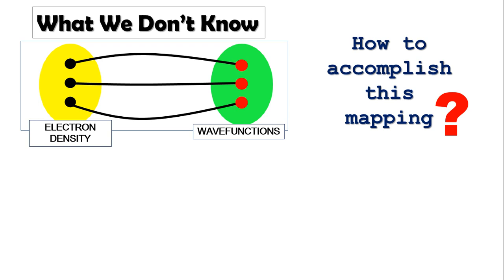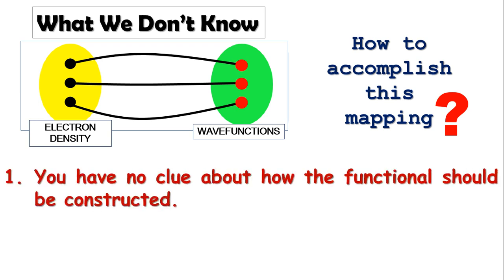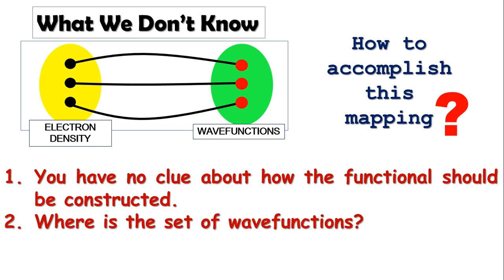In fact, after all this you are simply clueless about how the functional should be constructed. Even if a superhuman comes to you and provides you the needed electron density, still you will have no idea about the wave functions, because it's okay that there is an exact one-to-one mapping, but where is the set of wave functions within which we should search?